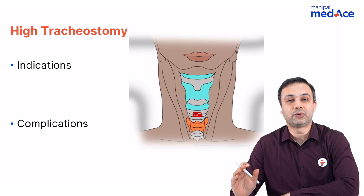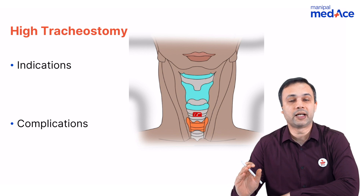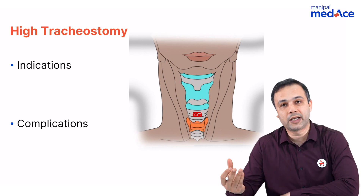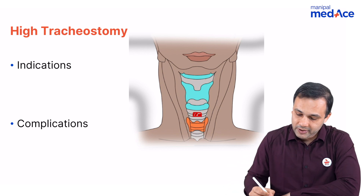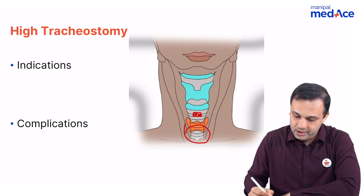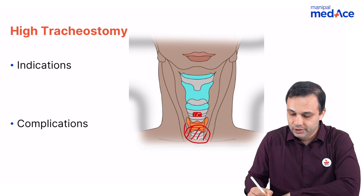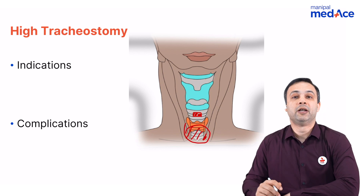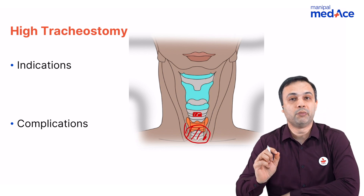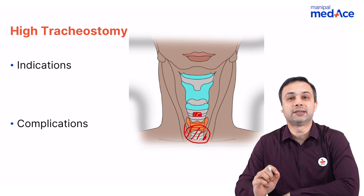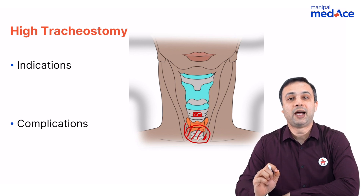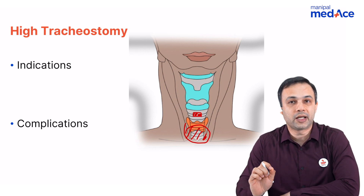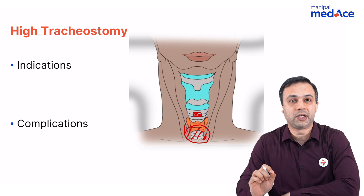In patients who have malignancy presenting with stridor, you do a high tracheostomy. It is then very easy to do a laryngectomy and create a permanent stoma at a lower level. When we talk about mid tracheostomy, it is usually done at the second and the third tracheal ring, and that is the most common type of tracheostomy.